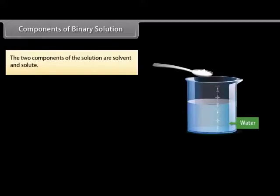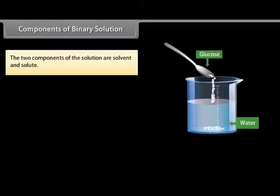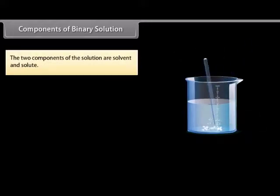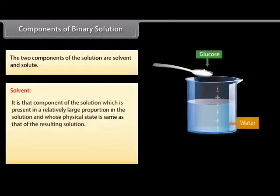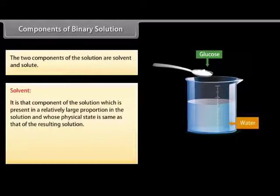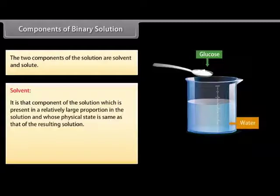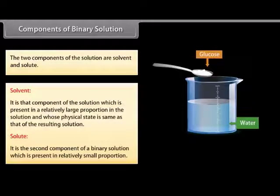The two components of the solution are solvent and solute. Solvent is that component of the solution which is present in a relatively large proportion in the solution, and whose physical state is same as that of the resulting solution. Solute is the second component of a binary solution, which is present in relatively small proportion.